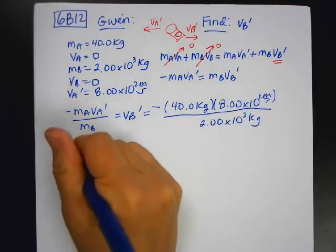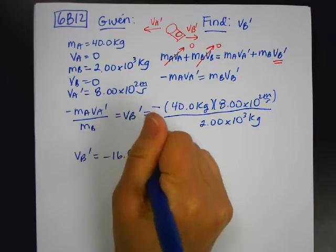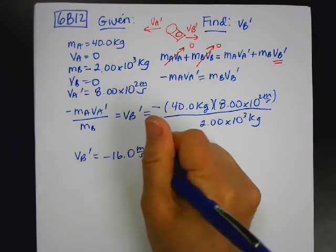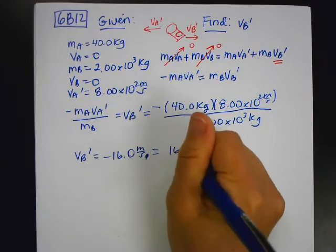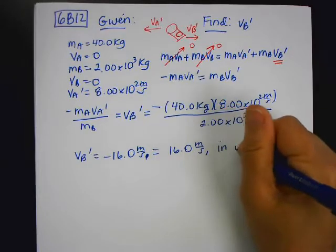So when I do it, v_B prime comes out to be negative 16 meters per second. But remember, the negative sign tells me the direction. So it's just basically in the opposite direction.